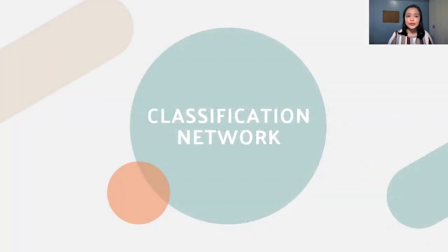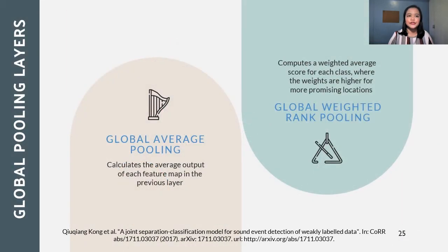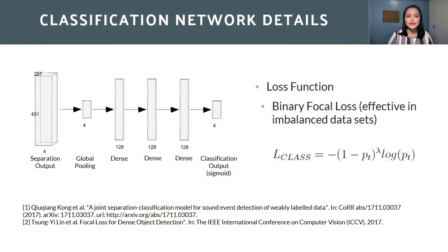The classification network of this system is a multi-label classification of the four sound sources. Two classification mappings were explored for this network. The first mapping is a global average pooling which calculates the average output of each feature map, while the global weighted rank pooling computes a weighted average score for each class. After adding global pooling layers in the separation network, four dense layers were added. Since the dataset does not focus on classification of sound sources, the ground truth labels for detection are imbalanced; hence, the binary focal loss is used for the loss function of this network.